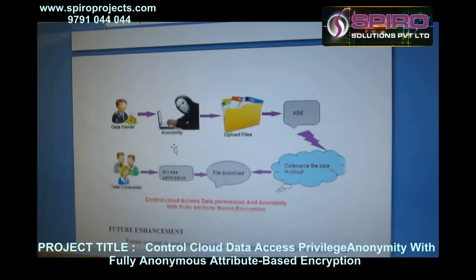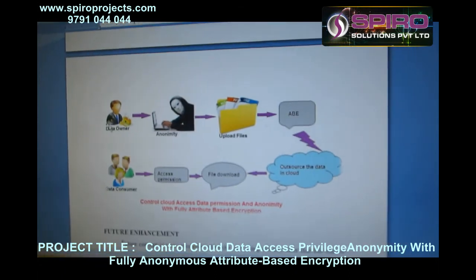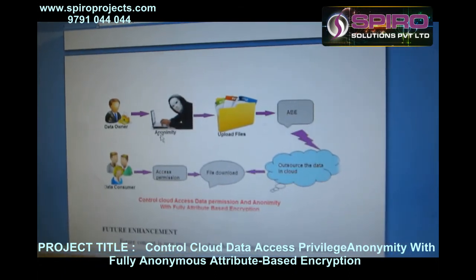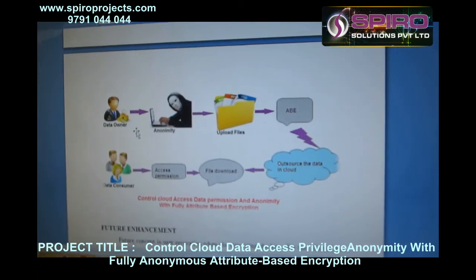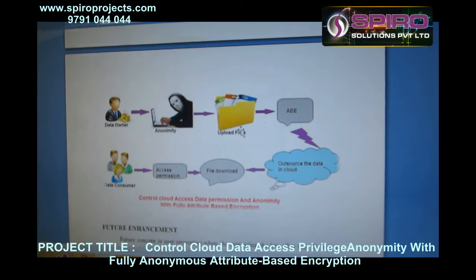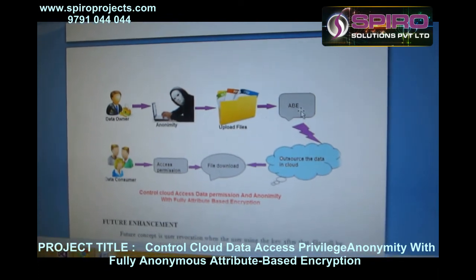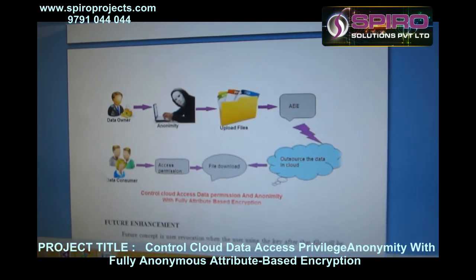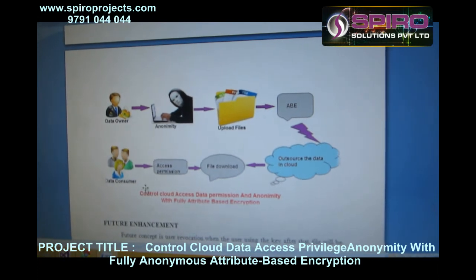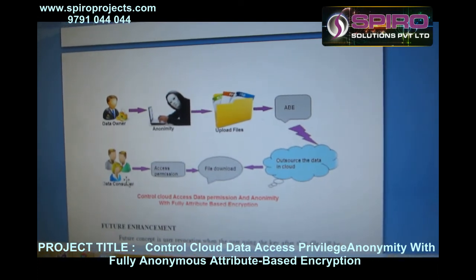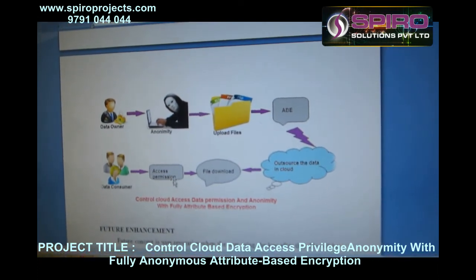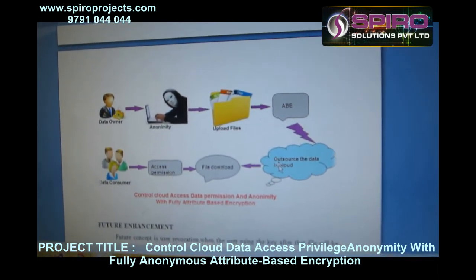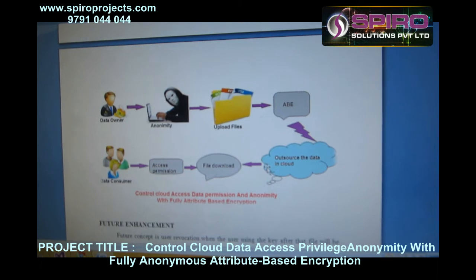This is the architecture diagram. The process involves adapting to your network. When you get data using attribute-based encryption, the data owner can access the password from the cloud and then decrypt the password.